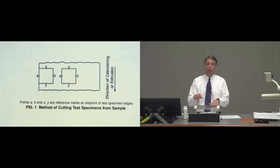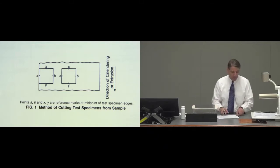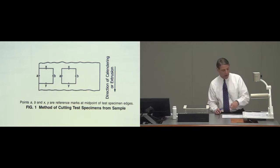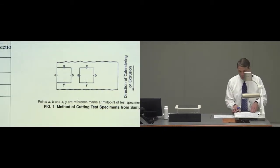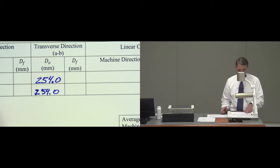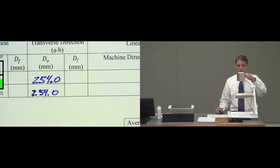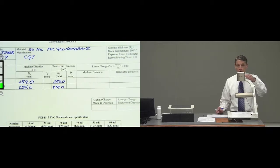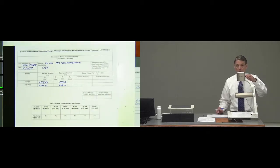I do the same for the center specimen and so I'd have the results for two specimens to conduct the dimensional stability test. So here are the calculations for these two specimens. I started with the edge specimen. The initial dimensions are